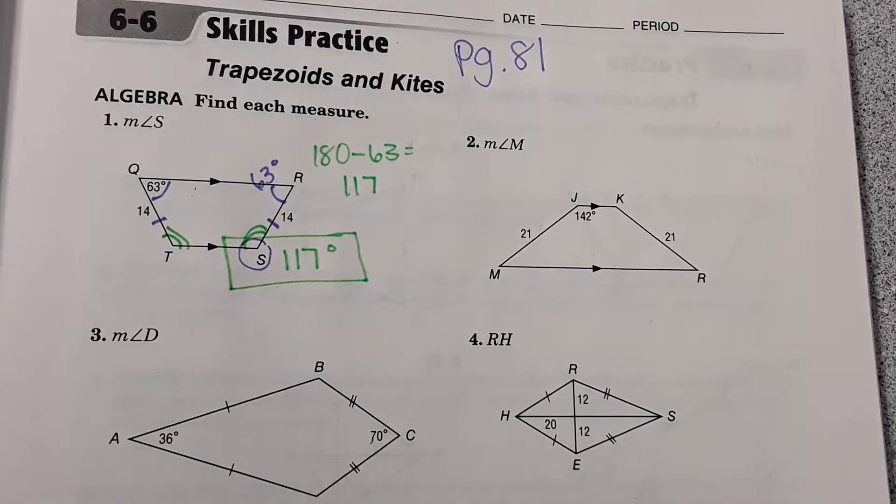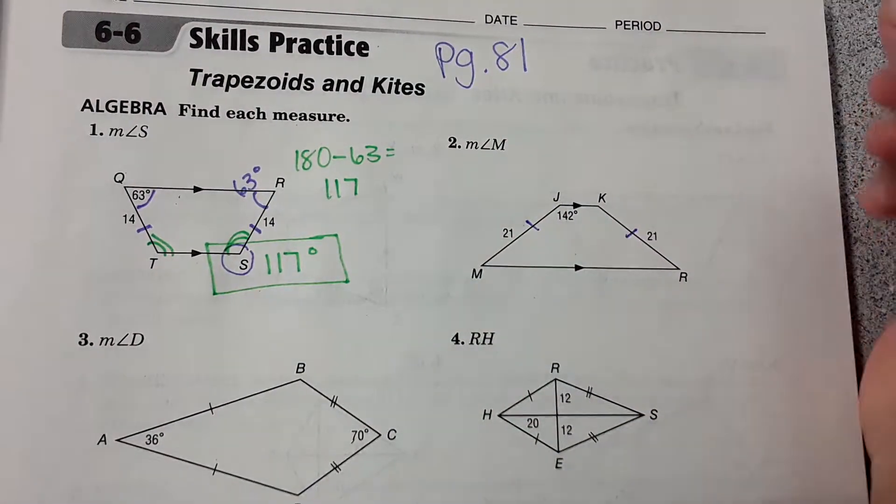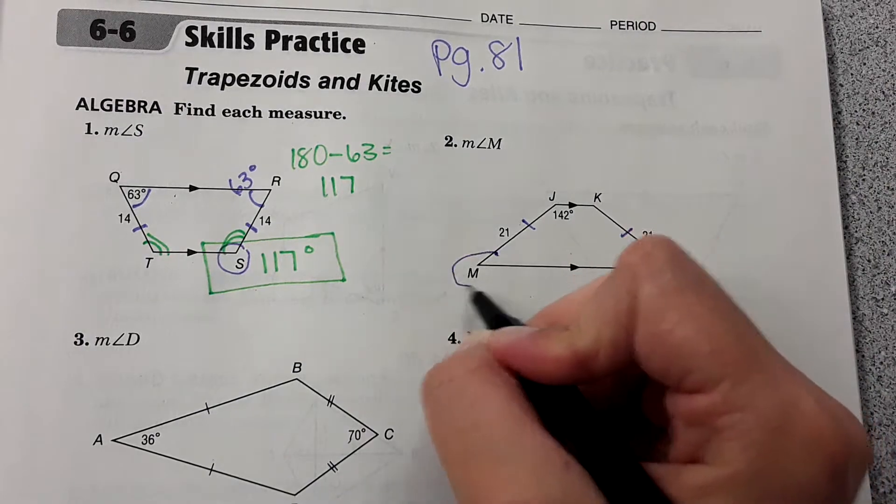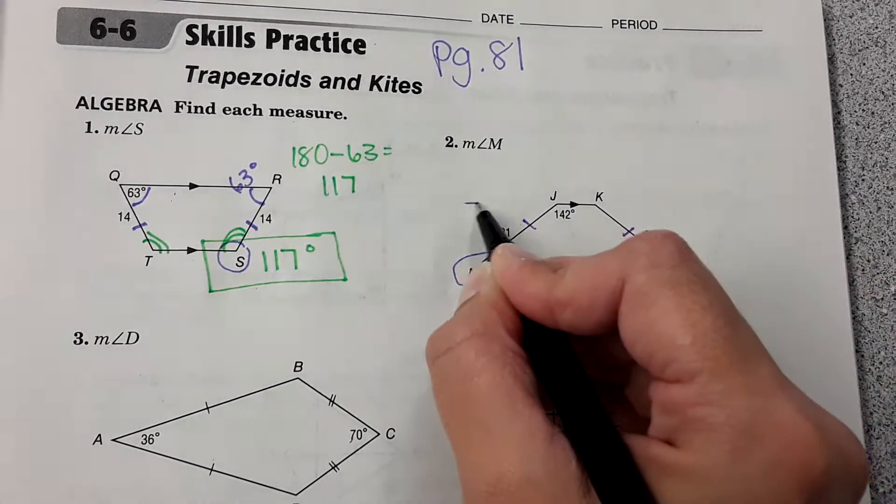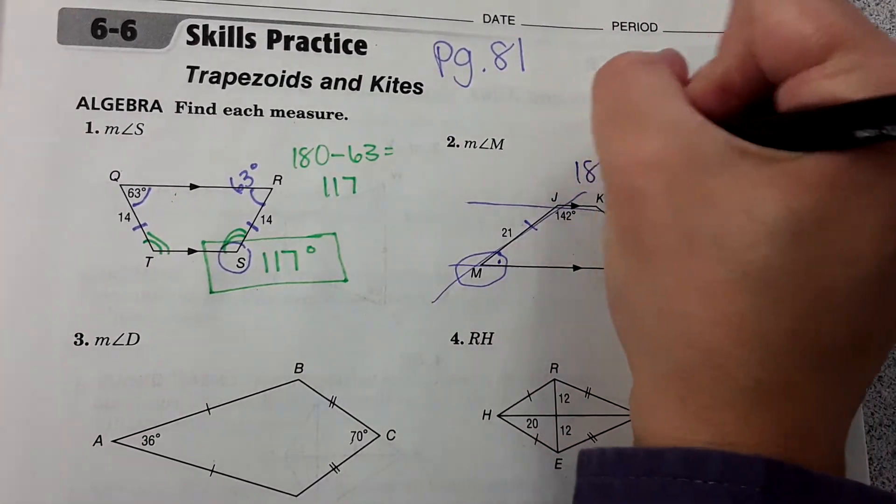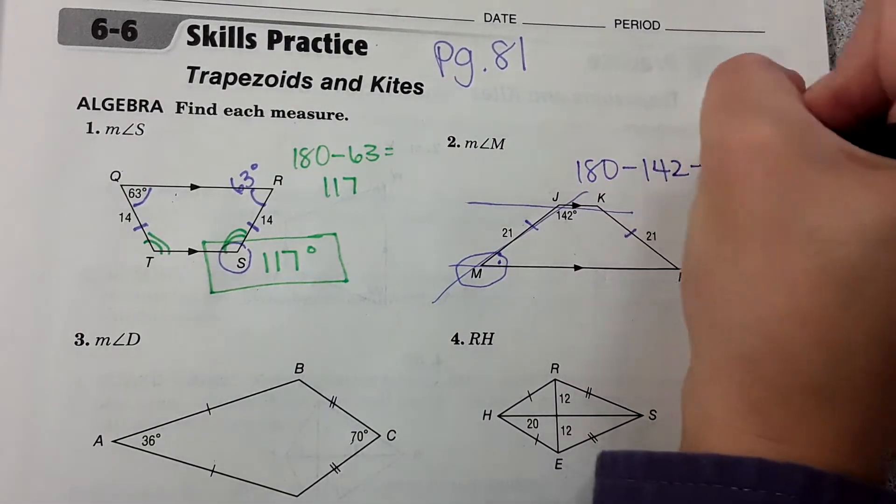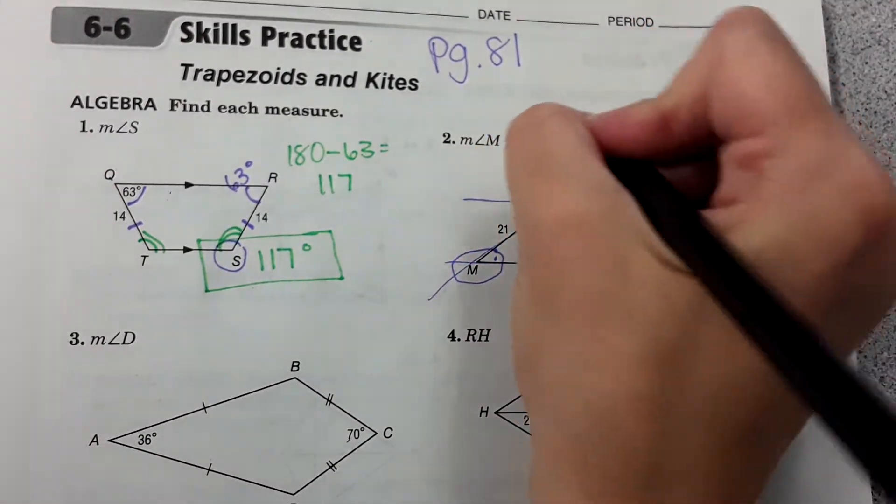Number two shows us an isosceles trapezoid again. This time it's asking for measure of angle M. These two are consecutive interior angles with your parallel lines and a transversal so therefore they're supplementary. So 180 minus 142 gives you 38. So measure angle M is 38 degrees.